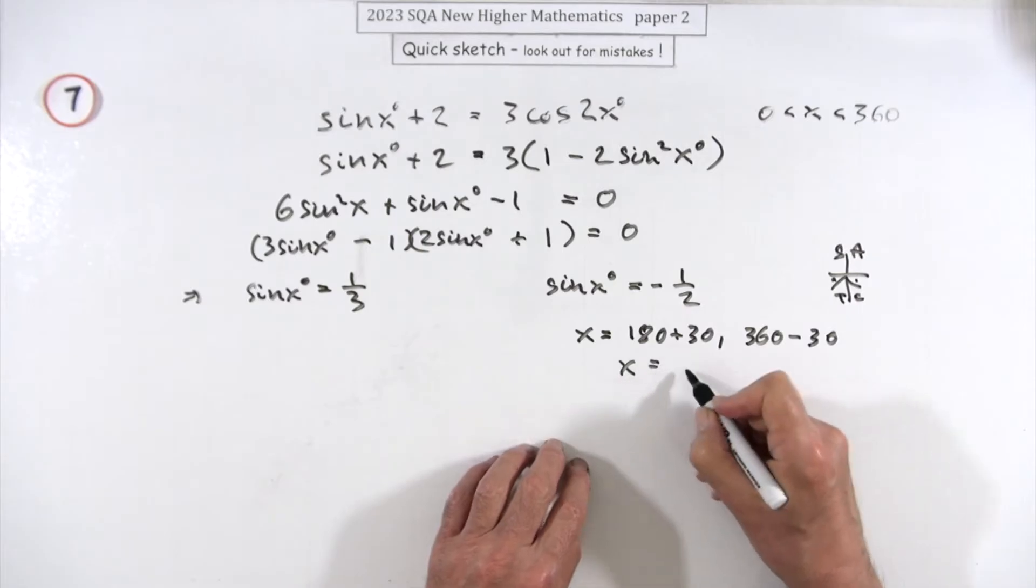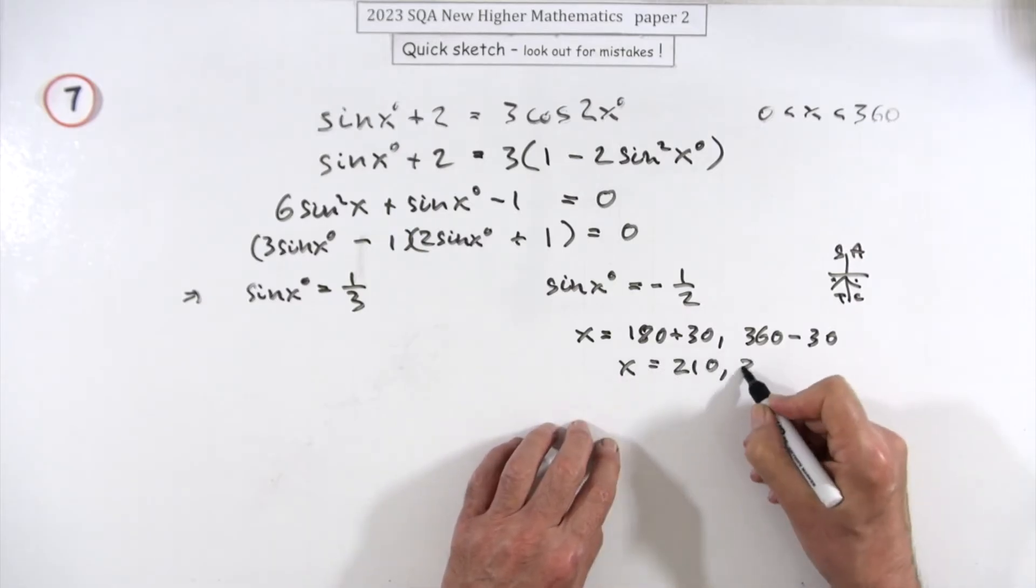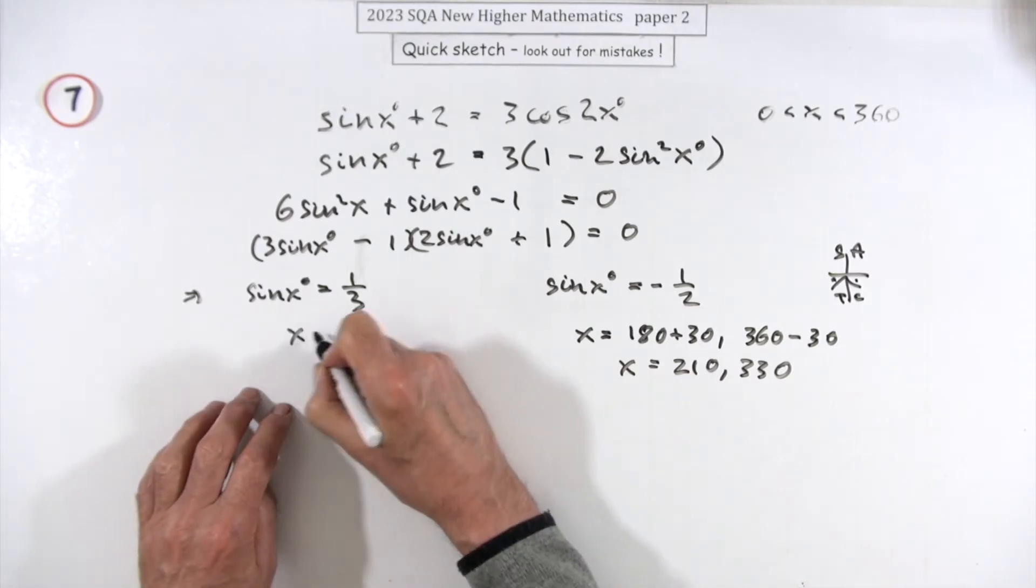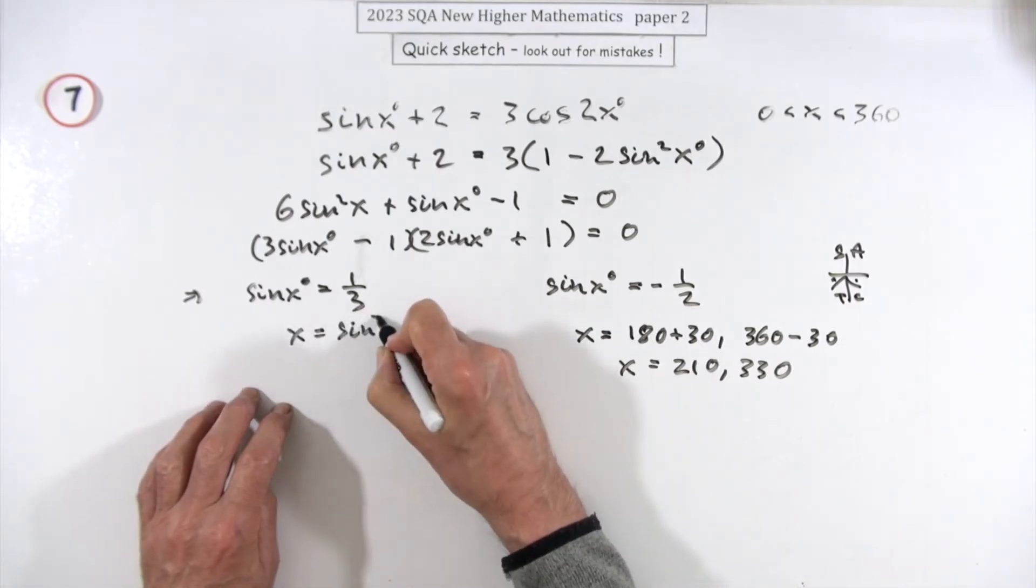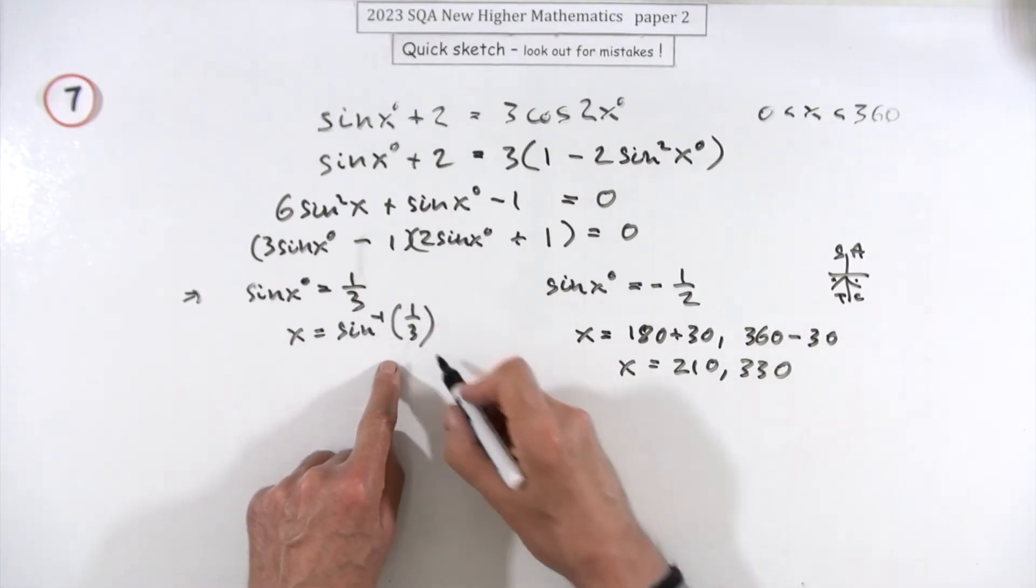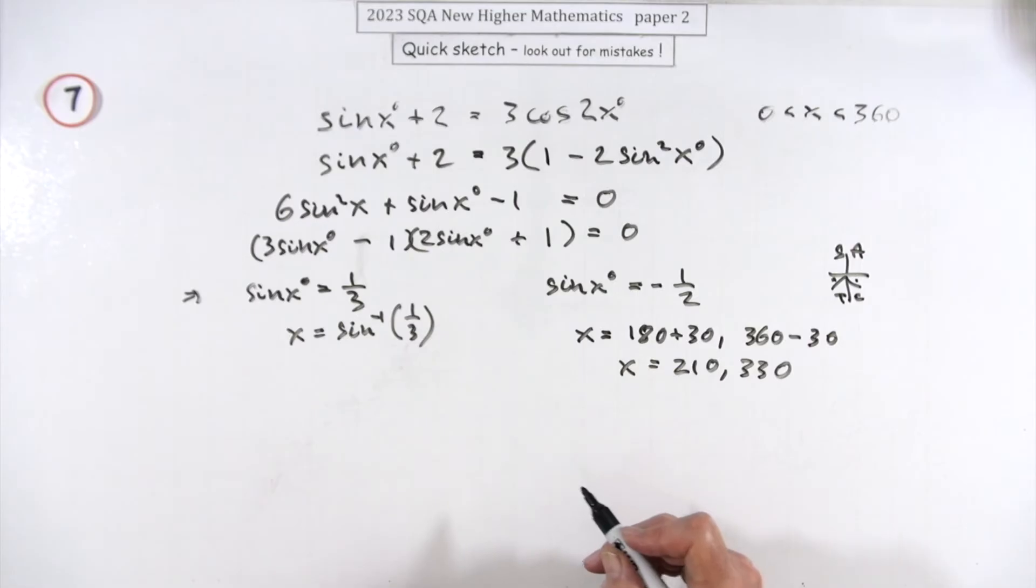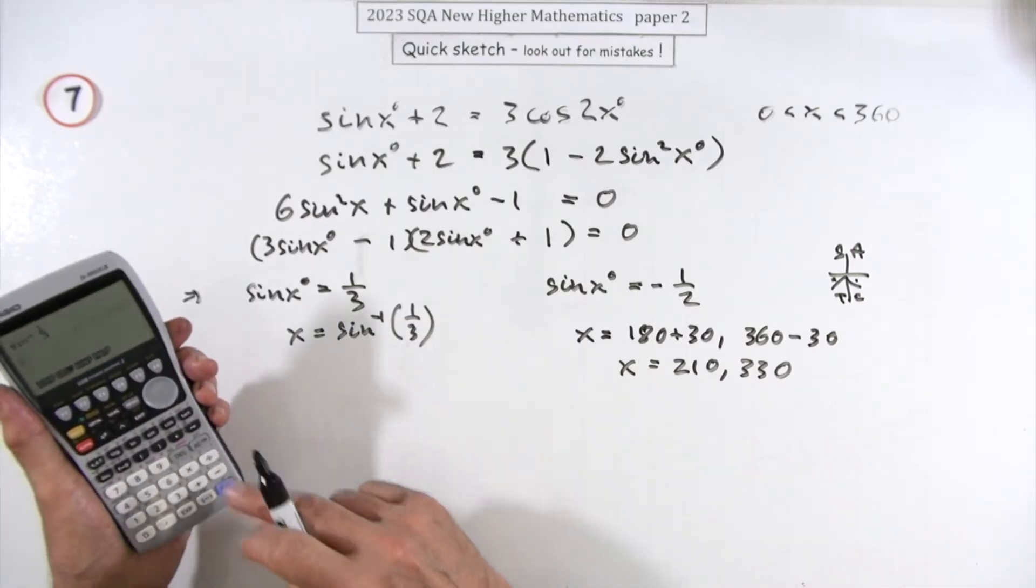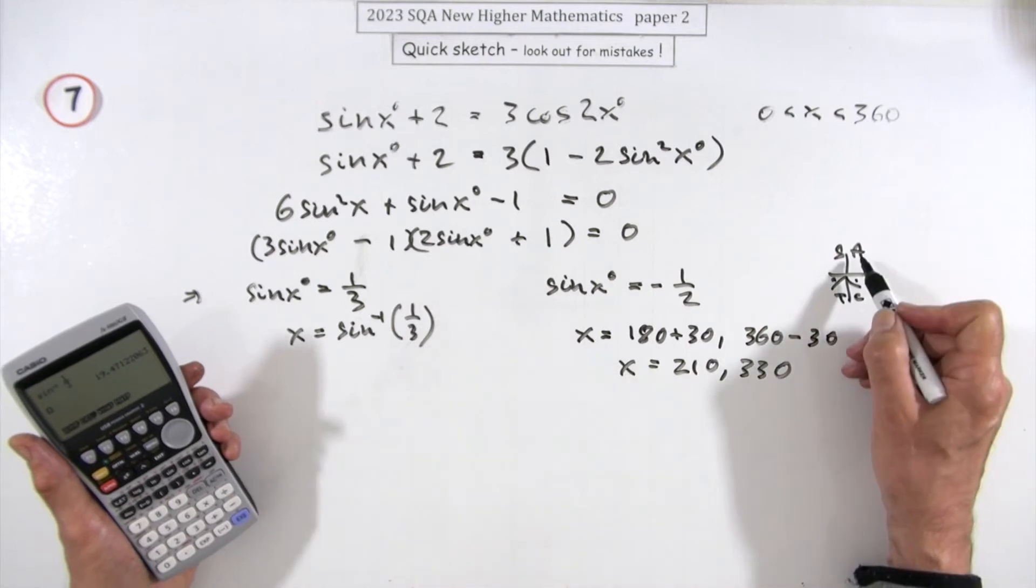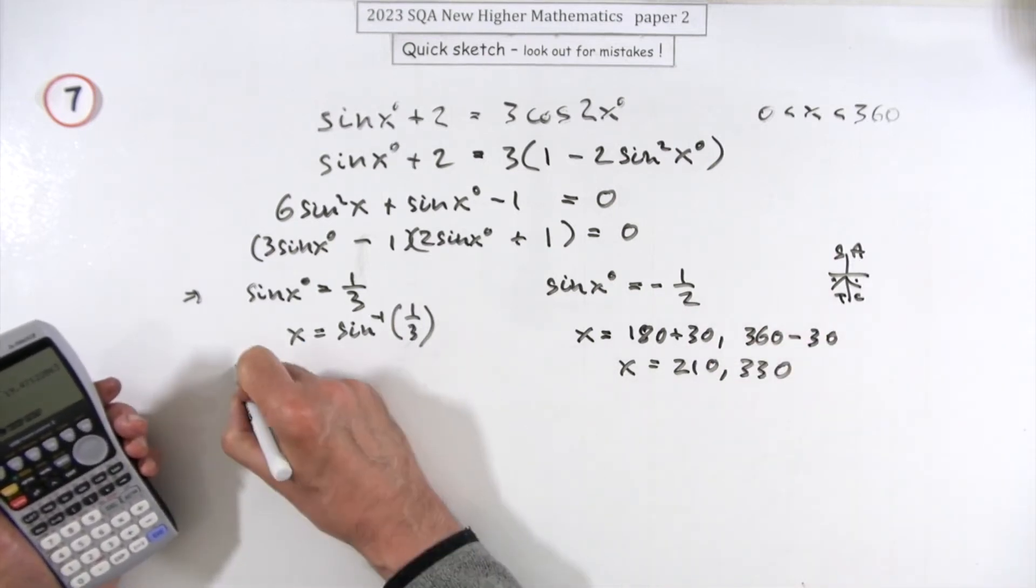So the two answers here are 210 and 330. That bit was okay. This one I don't really know, so I'll just have to use my calculator: inverse sine of 1/3. I'll just think back to that diagram—get the little acute angle first of all. So inverse sine of 1/3 gives you 19.47.